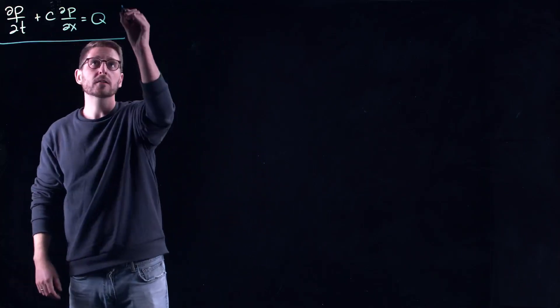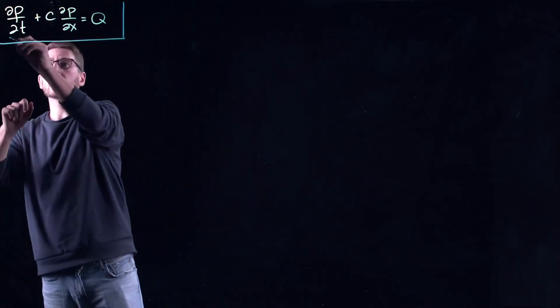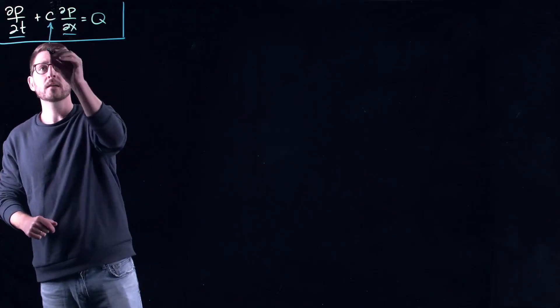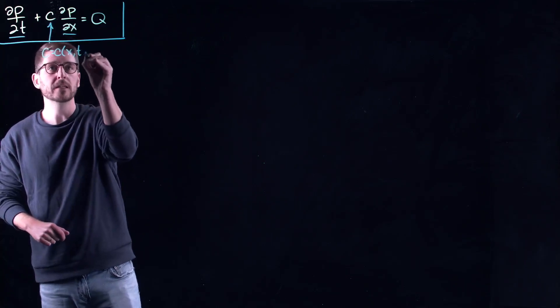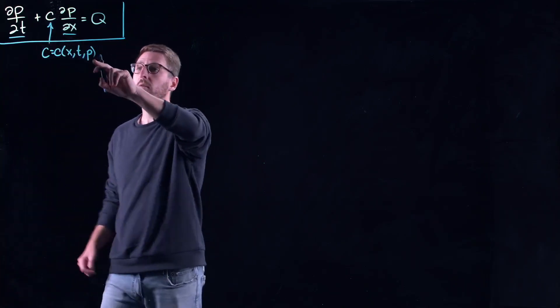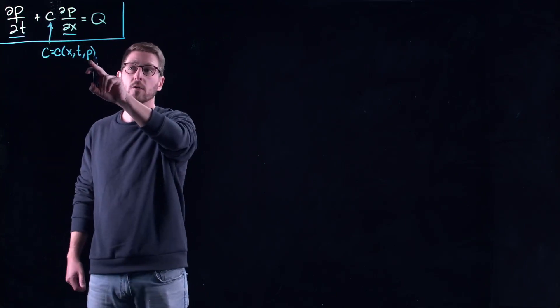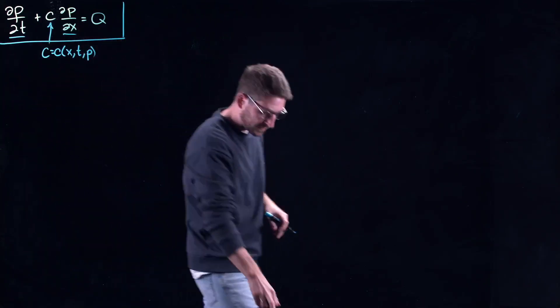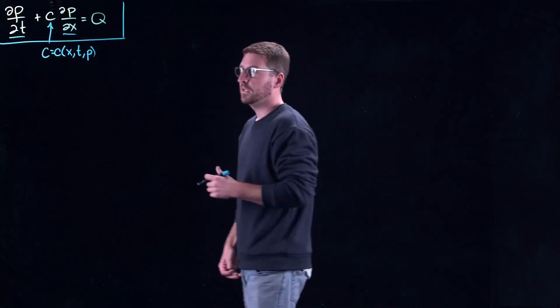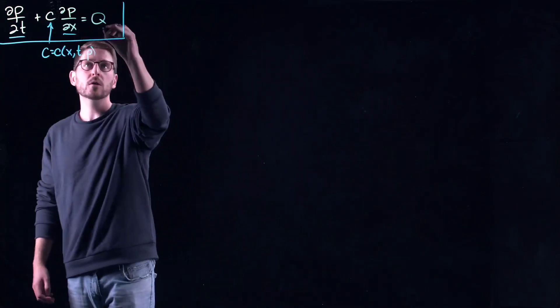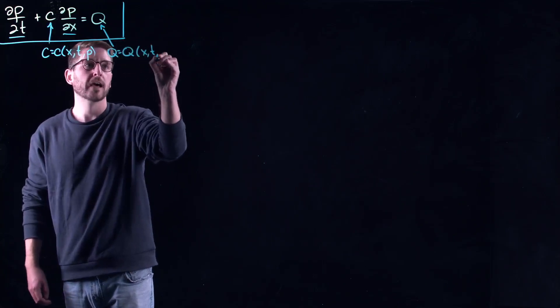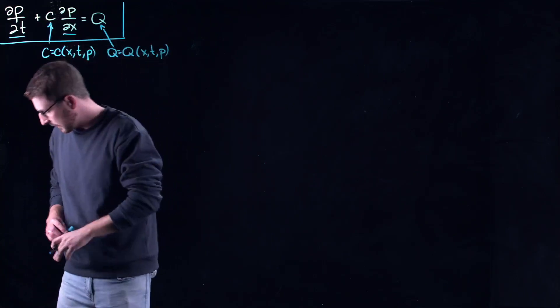The quasi part comes from the fact that it's linear in the highest derivatives that show up, while c could be a function of space-time and the unknown function itself. This could be very very non-linear but it is non-linear just in the unknown itself. The quasi-linear aspect comes from the fact that the partial derivatives are linear. Same thing with q, which could also be a non-linear function of x, t, and p if you really want to keep this completely general.